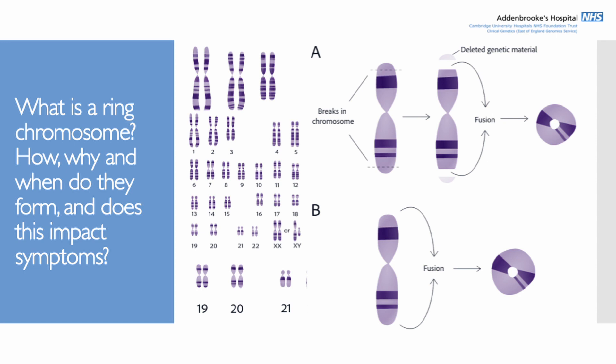The other possibility is that sometimes nothing is deleted. On the ends of chromosomes there is essentially a protective cap called a telomere, and those telomeres can fuse together as well — so nothing is lost, but the chromosome just fuses into a ring structure.